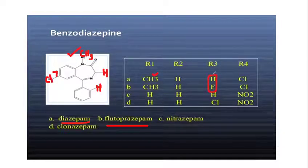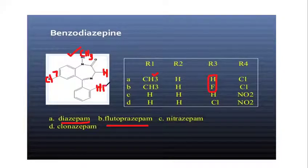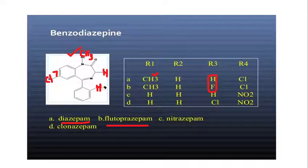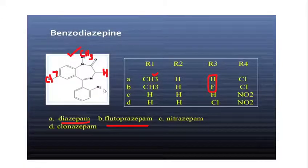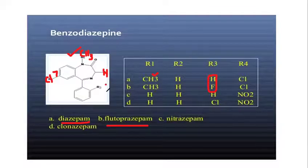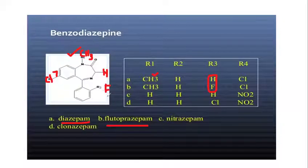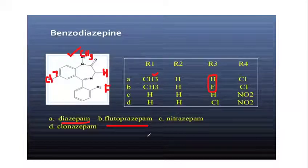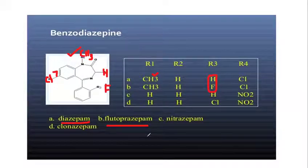At R3, if we have fluorine attached, the rest of the groups remain the same — that gives us flurazepam. One group change — fluorine at R3 — and it becomes flutoprazepam. So by substitution at these positions, the compound changes and becomes a different drug.